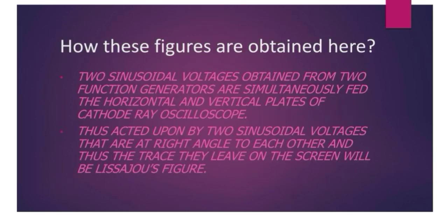Here's our next question. The viva examiner may ask you how these figures are obtained. When two function generators at the same time feed the horizontal and vertical plates of CRO, we get two sinusoidal voltages. These two sinusoidal voltages are 90 degrees to each other. When they act together, the trace they leave on the screen is the Lissajous figure.